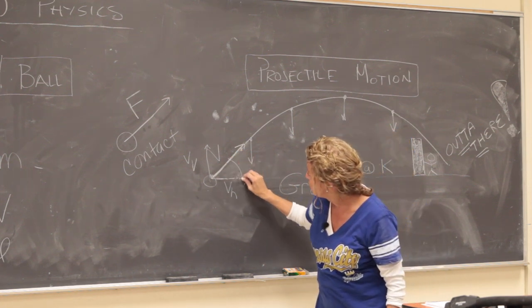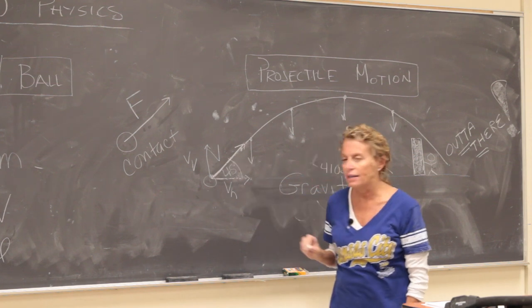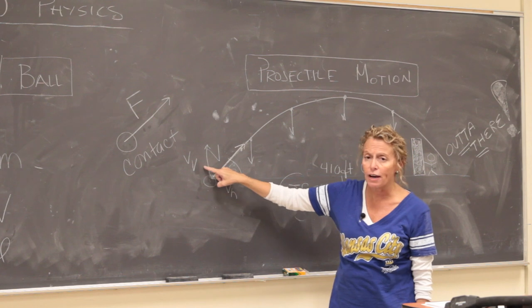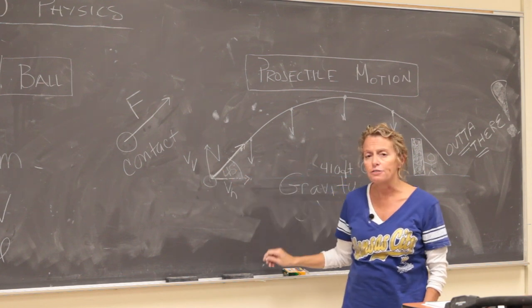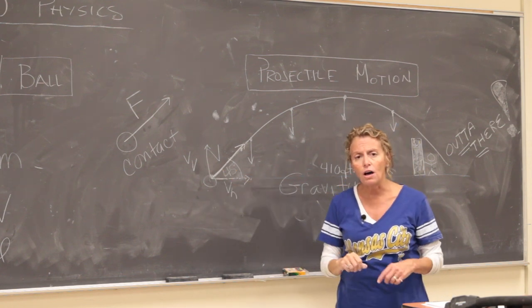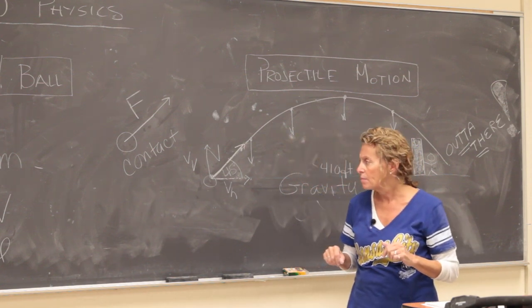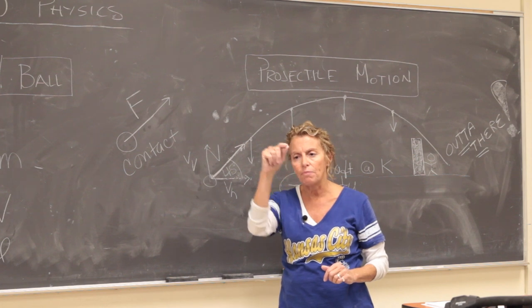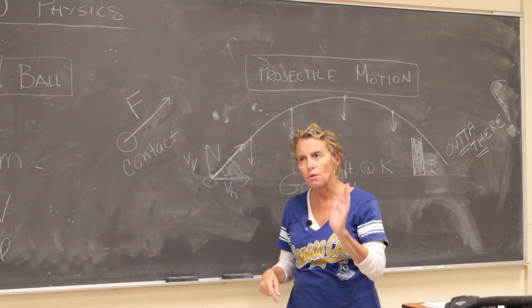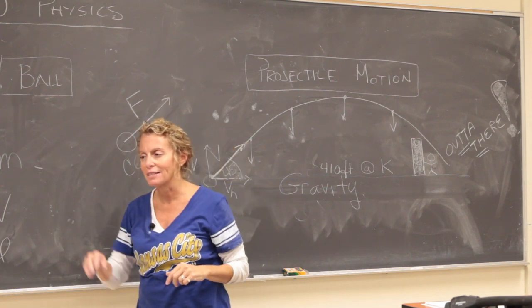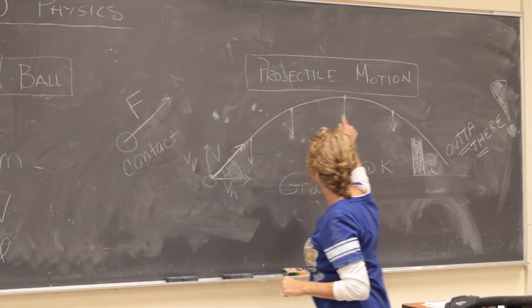We know that 45 degree angle right here is the optimum angle because when you have 45 degrees these two vectors are the same size and so what that does for you is while the ball is in the air it's going that way and at the same time it's going up on the way up and down on the way back. So it's going up and over, up and over, up and over simultaneously and then it goes down and over simultaneously.